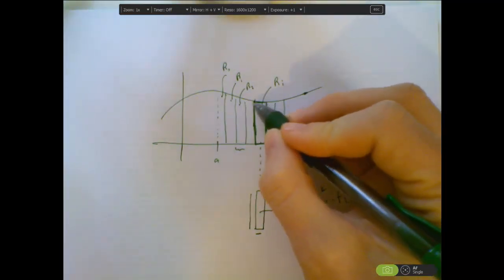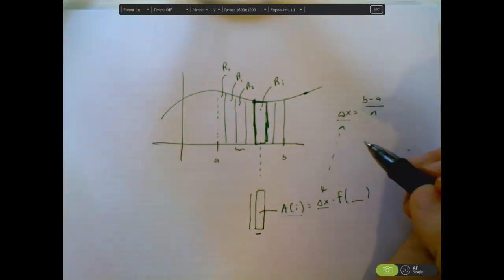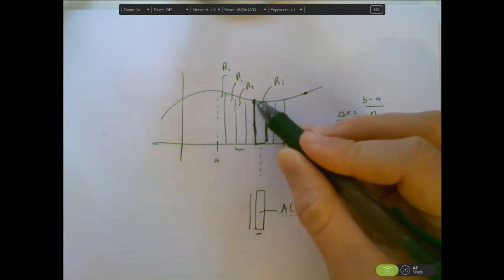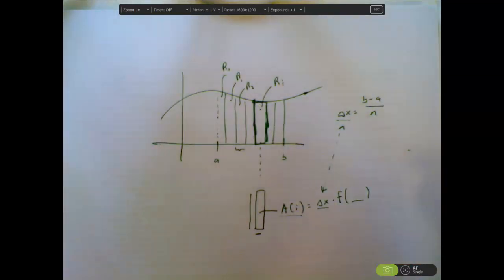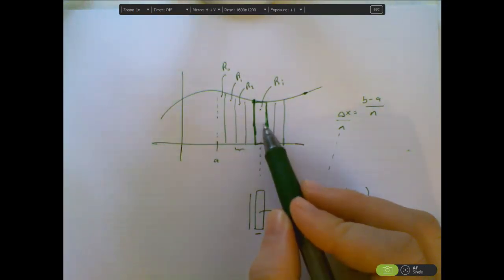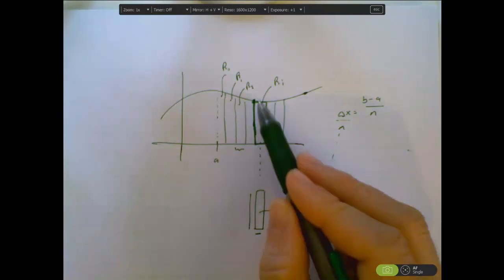We're using the function that we're finding the area under to determine the height. In particular, if I'm going to do a left rectangle approximation method, I'm going to choose the leftmost x value within my interval as the x value I'm going to plug into the function to tell me my height. So the question is, it's going to be f of something, but if I have gone over by i rectangles, exactly what is that value?